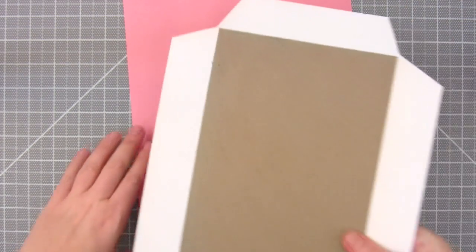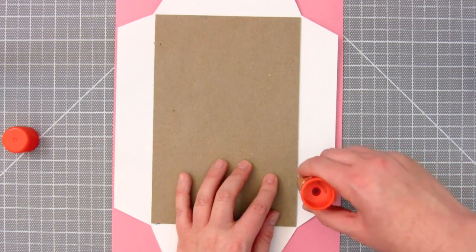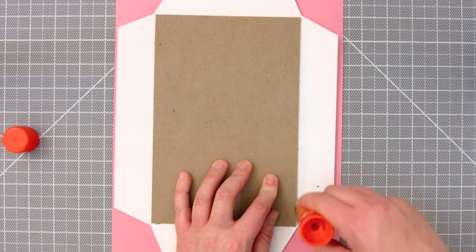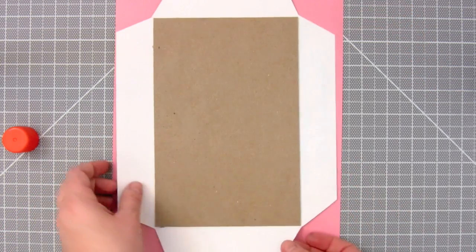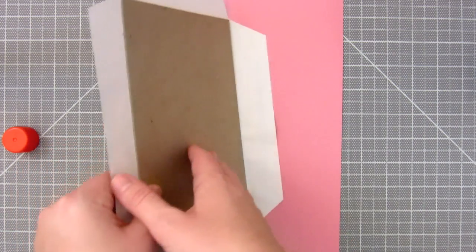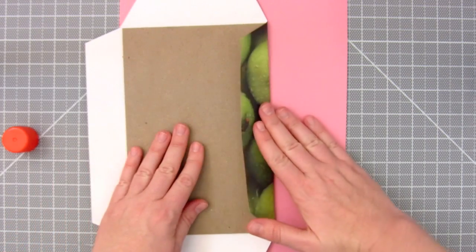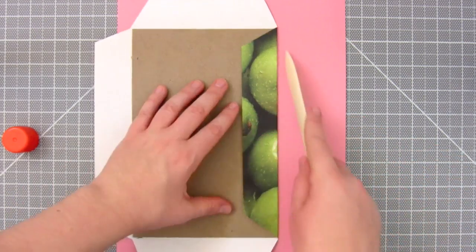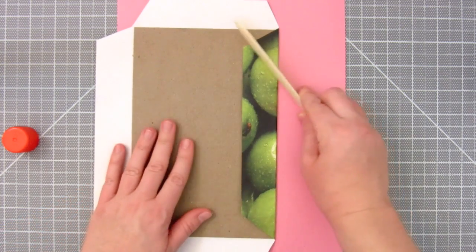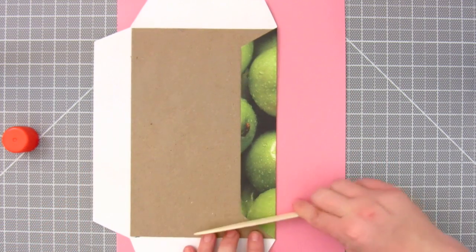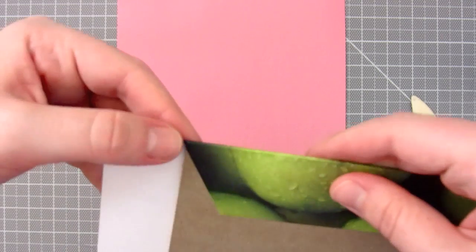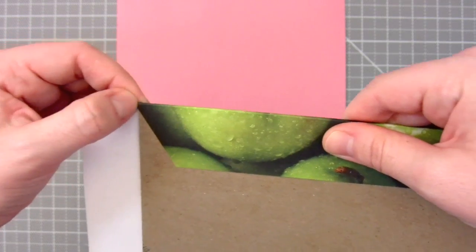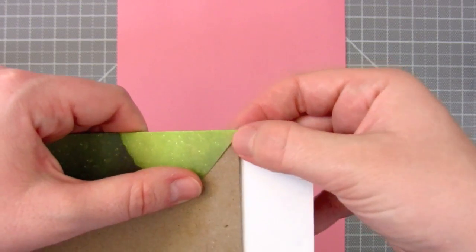Then glue one flap at a time. You can put a piece of scrap paper down in case the glue gets messy. If you bend the edge over like this, it creases the paper which helps the flap glue on evenly. You can then pinch over those little gaps on the corner tips and continue gluing on the rest of the flaps.